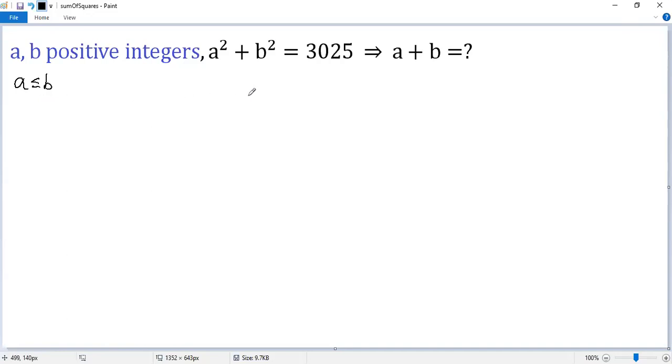Now, by prime factorization, we know 3,025 is actually the square of 55. So we get a squared plus b squared equals 55 squared. But we can write it as 11 times 5 squared, or 11 squared times 5 squared.